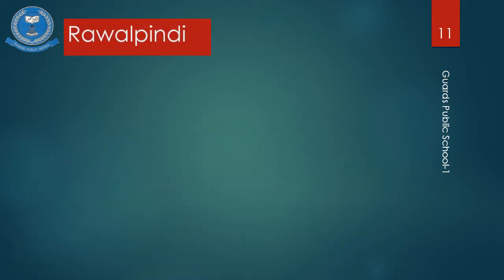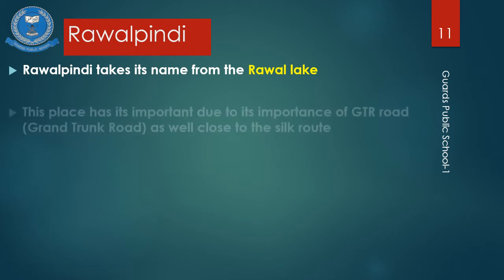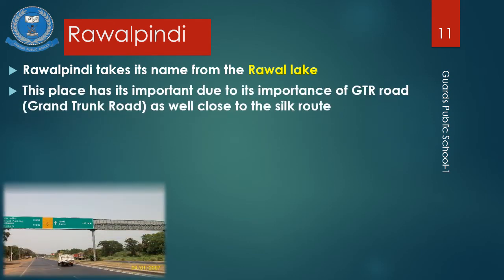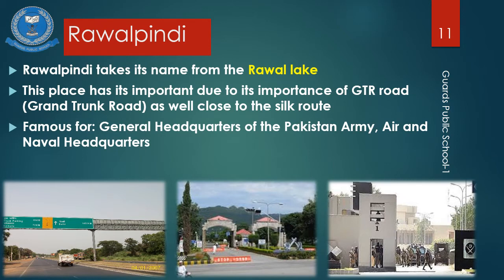Rawalpindi takes its name from Rawal Lake. This place has importance due to the Grand Trunk Road, also known as GT Road, as well as its proximity to the Silk Road. Rawalpindi is also famous for the Headquarters of the Pakistan Army, Air, and Naval Headquarters — all the armed forces are headquartered here.